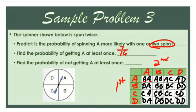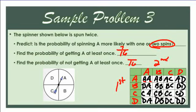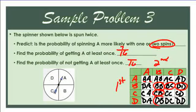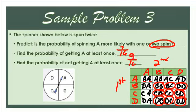What is the probability of not getting A at least once? There are sixteen total opportunities. Counting the combinations with no A's: one, two, three, four, five, six, seven, eight, nine. So nine out of sixteen is the probability of not getting an A.